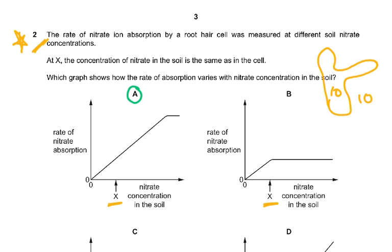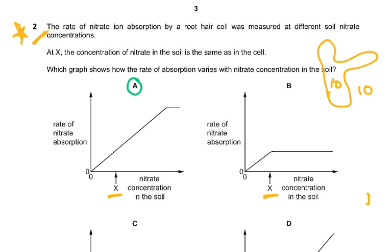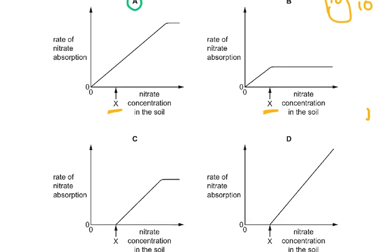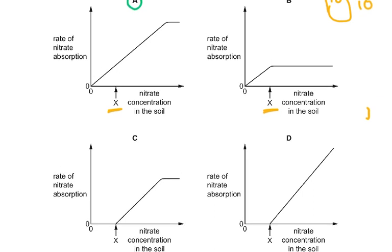Which graph shows how the rate of absorption varies with nitrate concentration in the soil? All four graphs have nitrate concentration on the x-axis, so let's look at all four graphs.